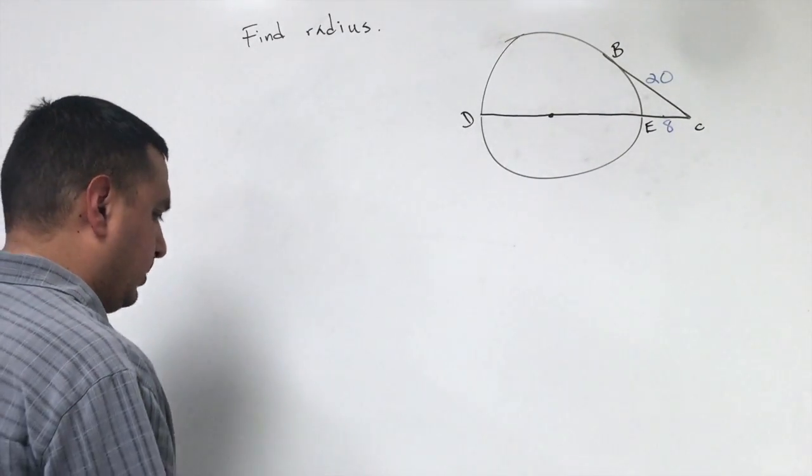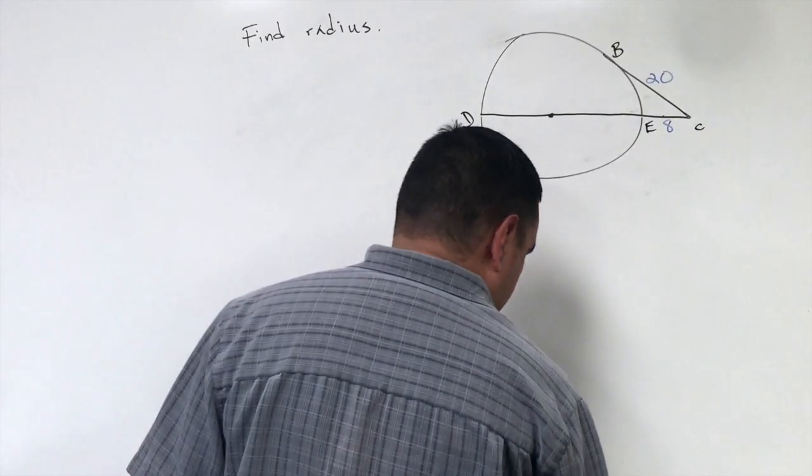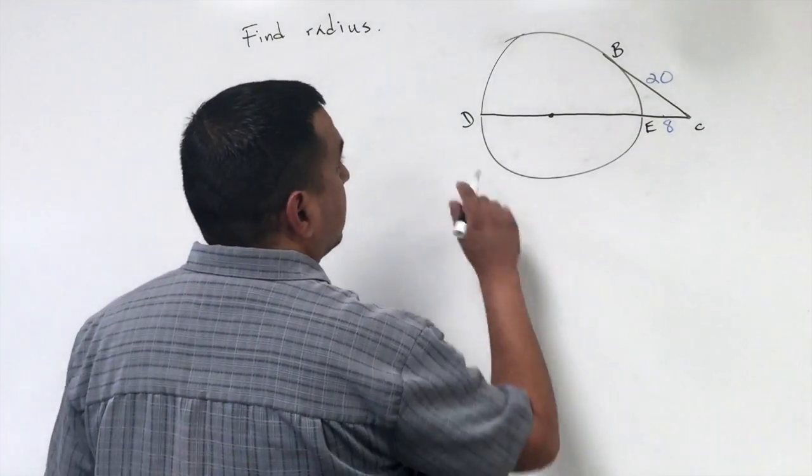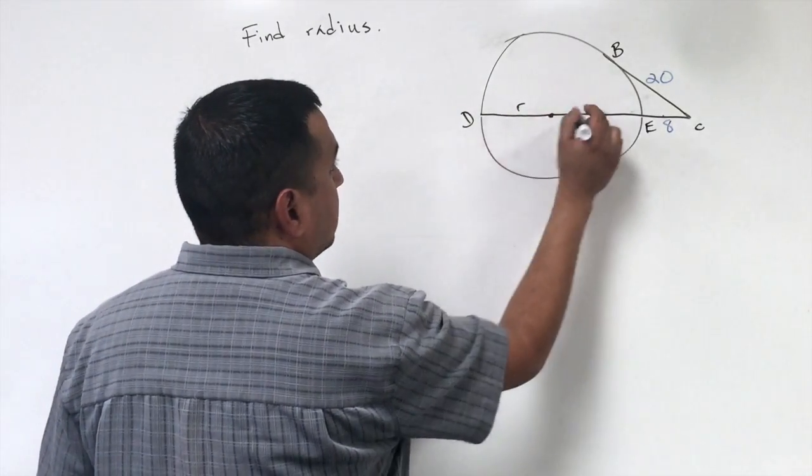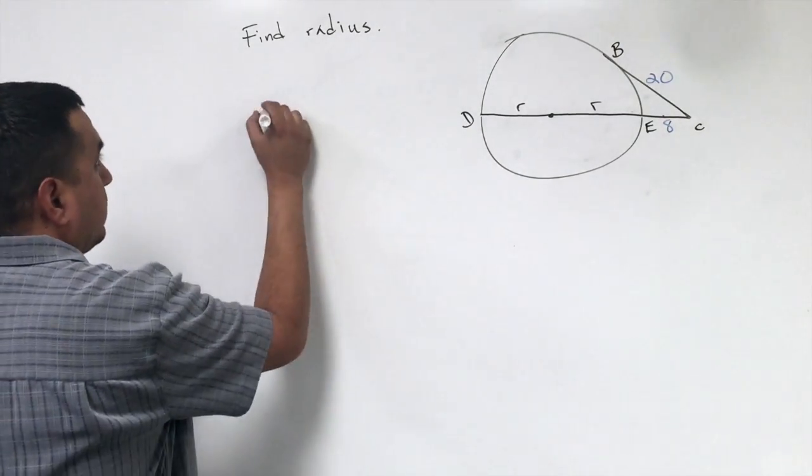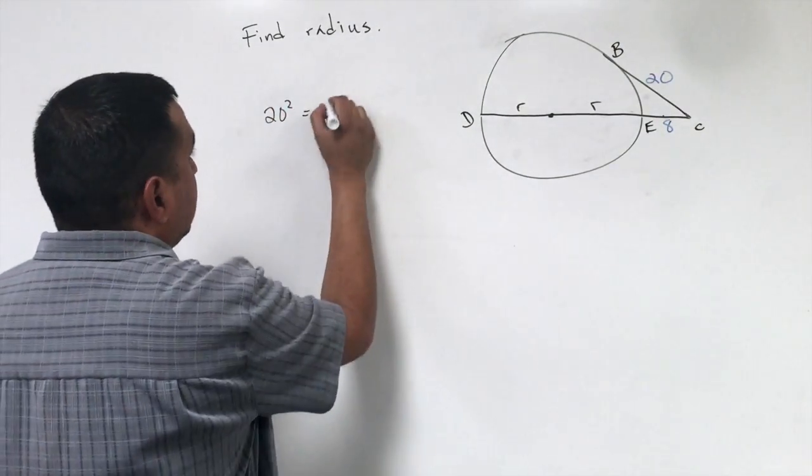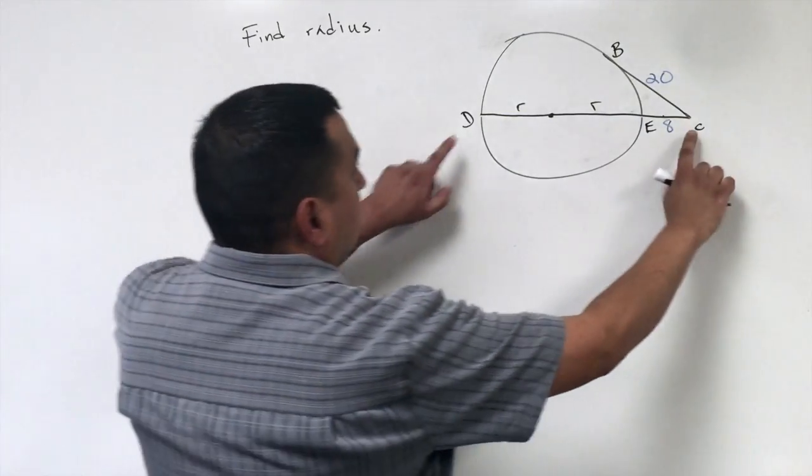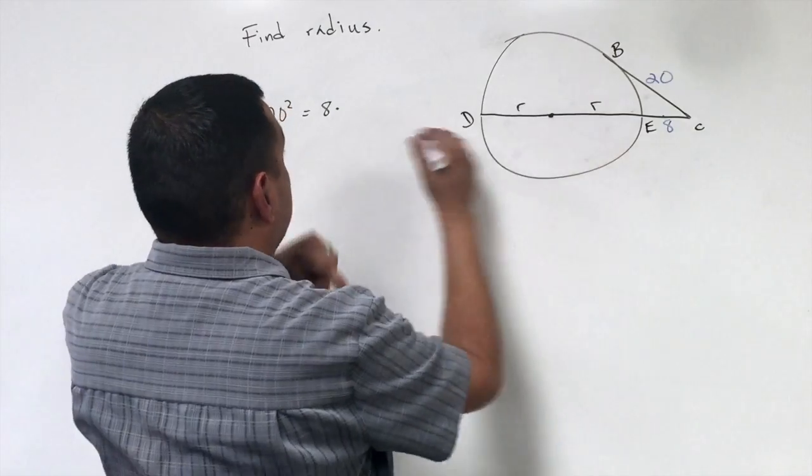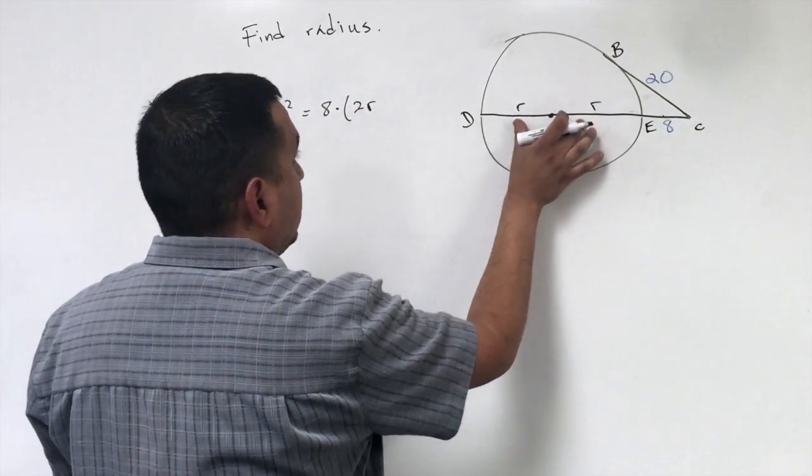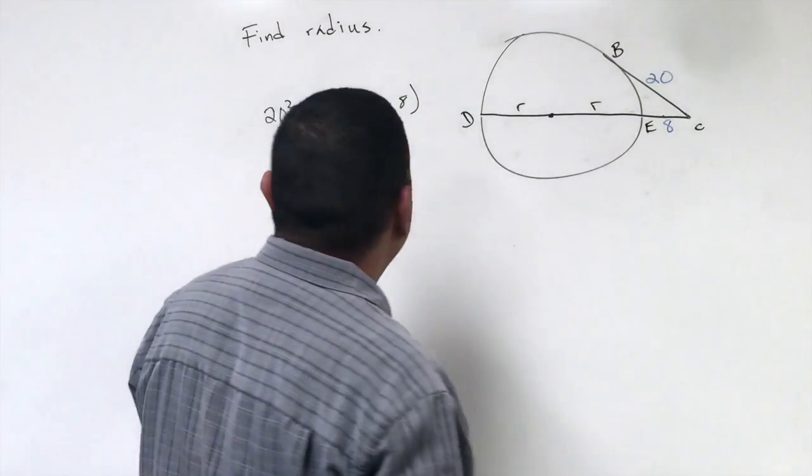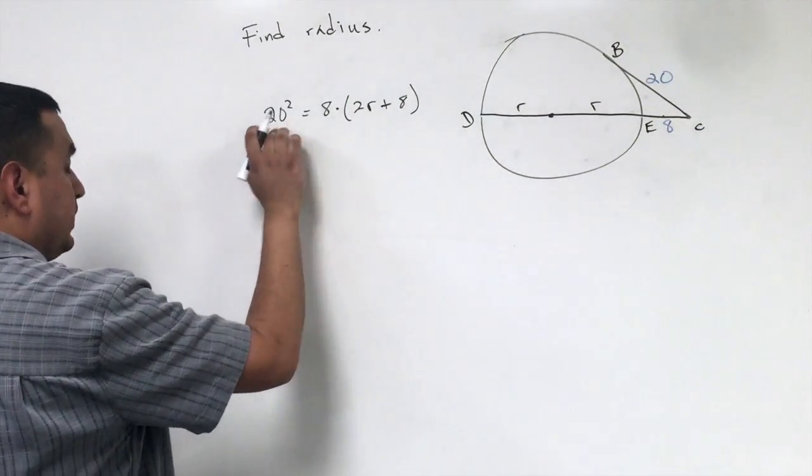So on this one, it wants us to find the radius of the circle. So, this right here is going to be R for the radius and then R right here. So the theorem said that it would be 20 squared is equal to 8 times the entire length of CD. So since I've got a radius and a radius, that's 2R, but I have 2 of these, plus 8 of them.